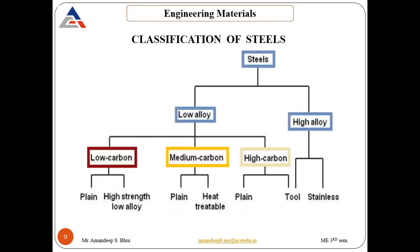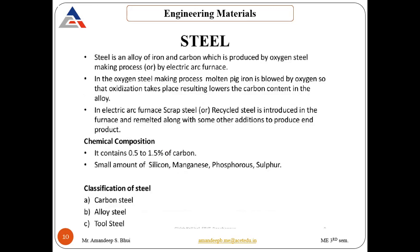Next is steel. Steels can be subdivided into low alloy and high alloy steels, and low carbon, medium carbon and high carbon steels. Steel is an alloy of iron and carbon, produced by two methods: one is the oxygen method in which oxygen is blown into the pig iron.